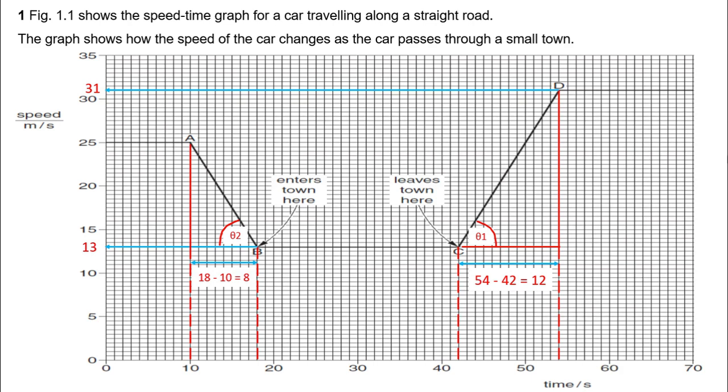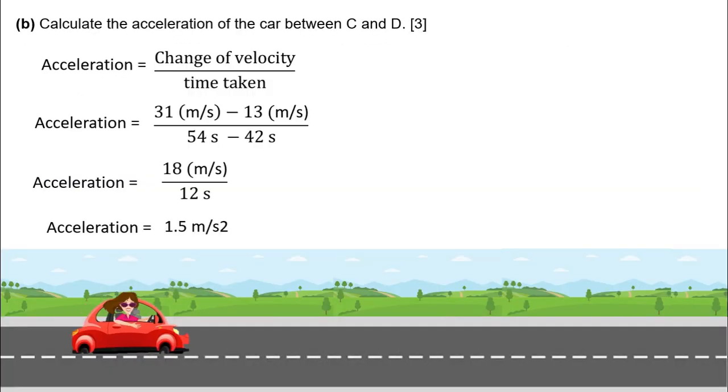Now we know both data: the velocity change is 18 meters per second and time taken is 12 seconds. By dividing these two, we can get the acceleration as 1.5 meters per second squared.